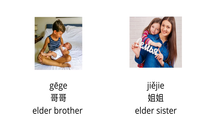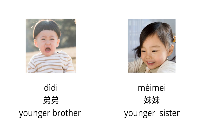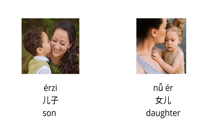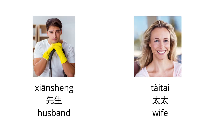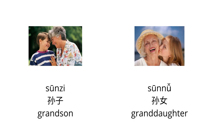Elder brother: 哥哥. Elder sister: 姐姐. Younger brother: 弟弟. Younger sister: 妹妹. Son: 儿子. Daughter: 女儿. Husband: 先生. Wife: 太太. Grandson: 孙子. Granddaughter: 孙女.